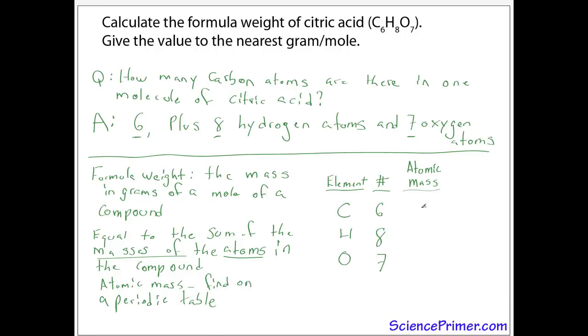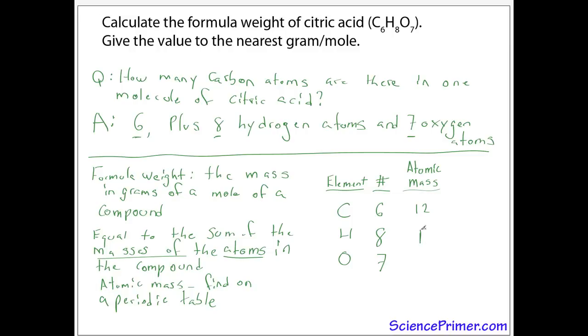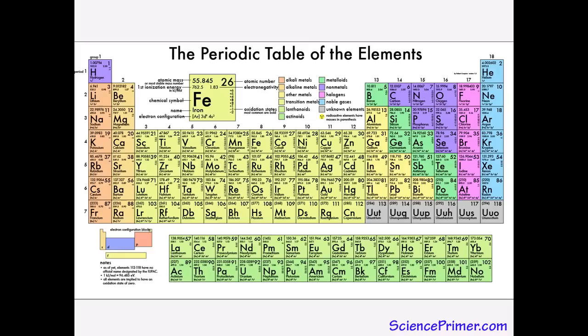Go back to the periodic table, find hydrogen, and see that its value is 1.007. Round this to 1 and place it in the table, and finally back one more time for oxygen, where we see the value is 16.